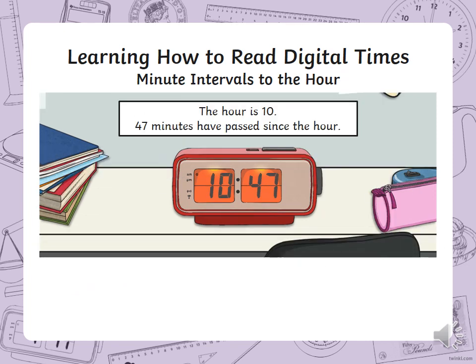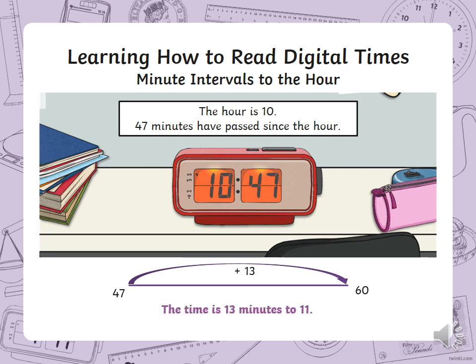The hour is 10, 47 minutes have passed since the hour. Work out how many more minutes we need from 47 to 60 to complete the hour, and figure out what the next hour is after 10. The next hour after 10 is 11 — so we have 13 minutes to 11.